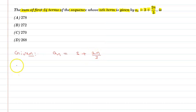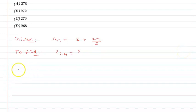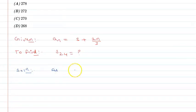So we have to find the sum of first 24 terms. Let's see, an is given as 3 + 2n/3.